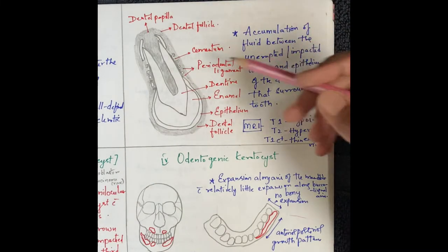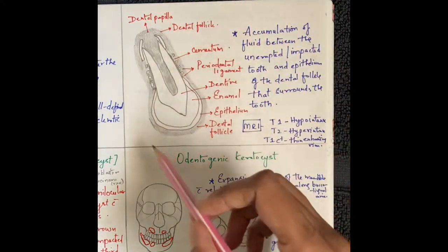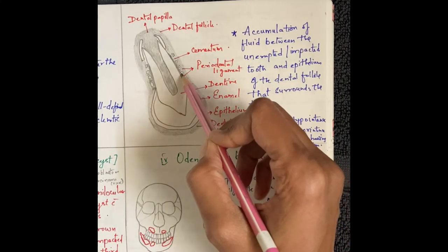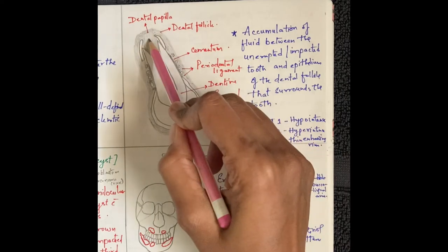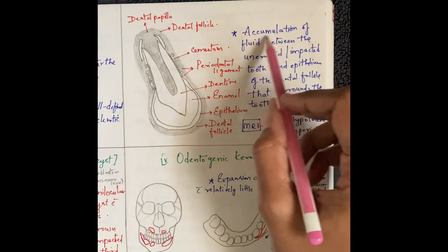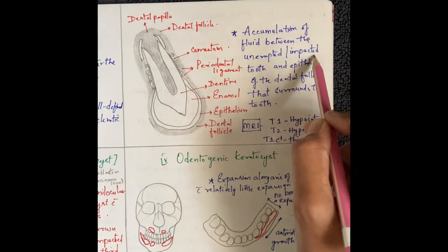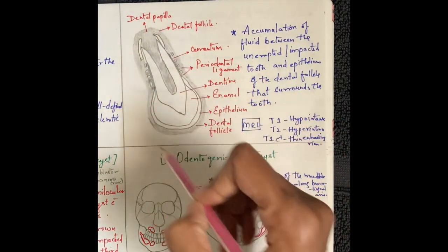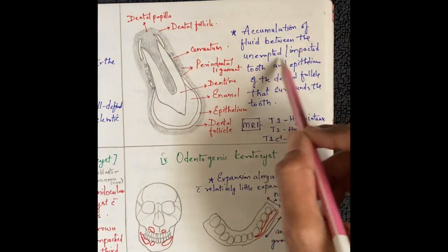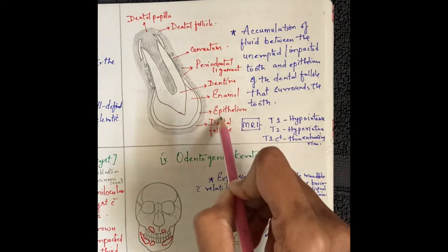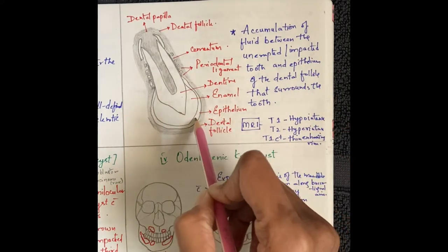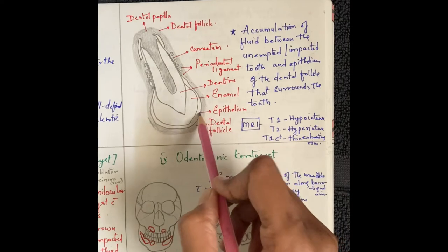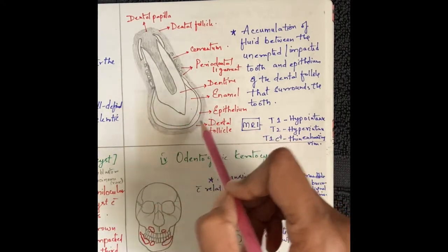Regarding the pathology of the dentigerous cyst: the dental follicle has an epithelium surrounding the unerupted tooth. In the dentigerous cyst, fluid accumulates between the unerupted or impacted tooth and the epithelium of the dental follicle. This fluid accumulation between the follicular epithelium and the tooth leads to formation of the dentigerous cyst.